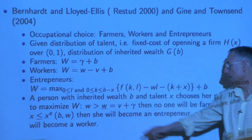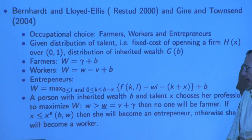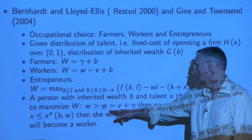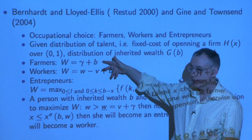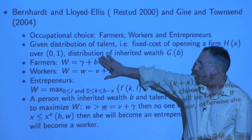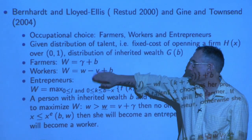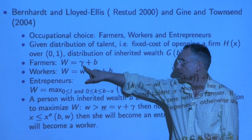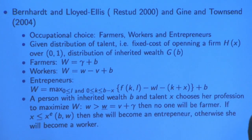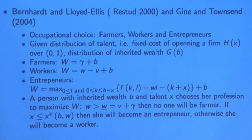In equilibrium, to have both farmers and workers coexisting, the two equations have to be equal to each other. So as long as the wage less this cost of living does not exceed gamma, a household would be indifferent about whether to migrate to the city for a wage versus stay in farming.